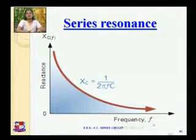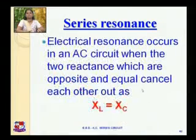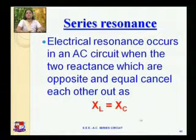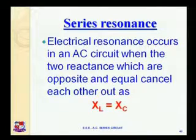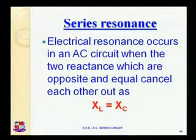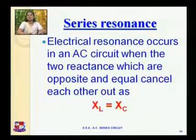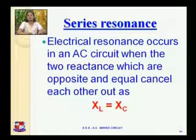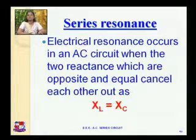In electrical resonance, this occurs in an AC circuit when the two reactances which are opposite and equal cancel each other out — that is, XL is equal to XC. When XL is equal to XC, then XL minus XC is equal to zero. When this happens, it is known as series resonance.